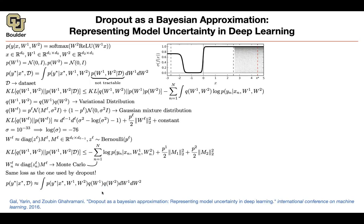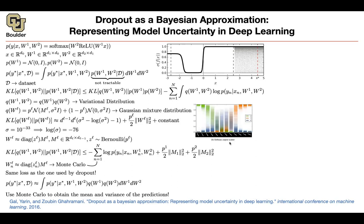For inference, instead of averaging out the predictions of your model, just sample from that distribution. As a new data point comes in, sample from your dropout distribution — it will give you multiple predictions for the same input x0. Then you can report the mean and the variance of your distribution. You're using Monte Carlo to obtain the mean and variance of your predictions. The only change from standard dropout: at inference, keep your samples, don't average out, and report the variance as well.